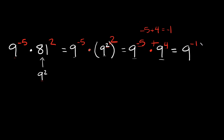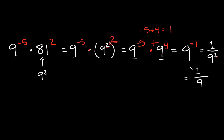Now the last thing we have to do is simplify this negative exponent — the negative one. Whenever you have a negative exponent, all you have to do is put this in a fraction underneath one, so it goes in the denominator, and the exponent turns into a positive. You always put a one on top. If you need extra help with negative exponents, I'll link a video in the card above. Since nine to the first power is just nine, we can rewrite this as simply one over nine. So your answer is positive one ninth.